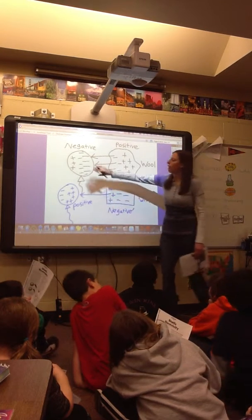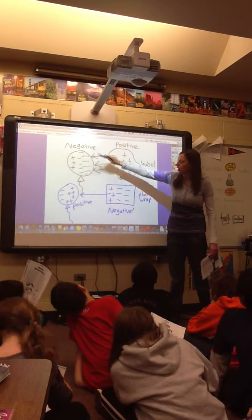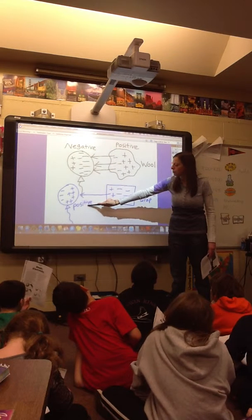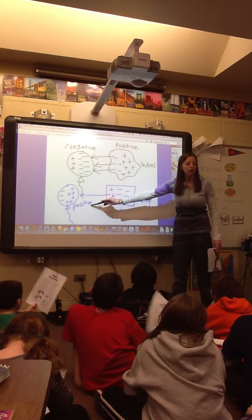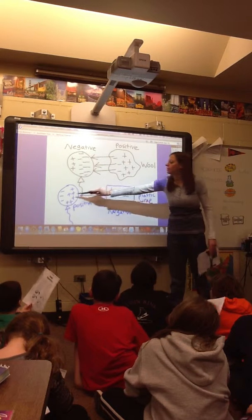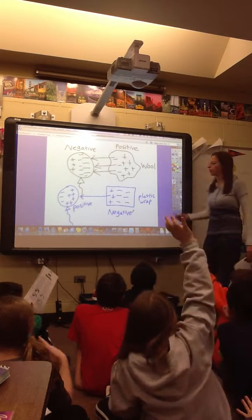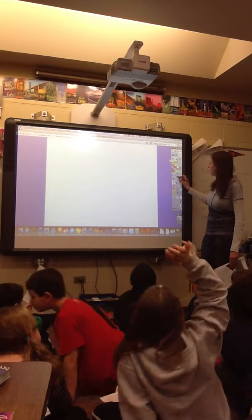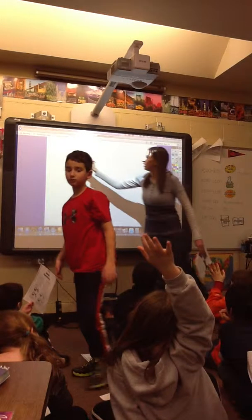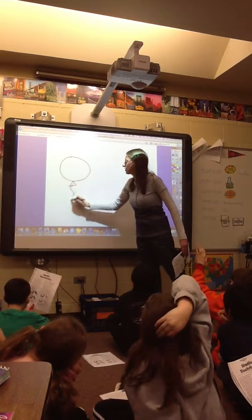So if my balloon that was rubbed with wool has a negative charge, and my balloon that was rubbed with plastic wrap has a positive charge, what do you think is going to happen to these two balloons when we bring them near each other? I'm going to draw that same thing over here, just spacing it out.